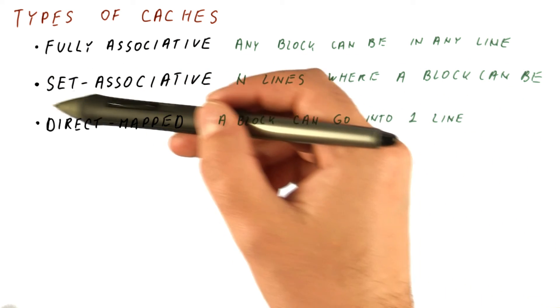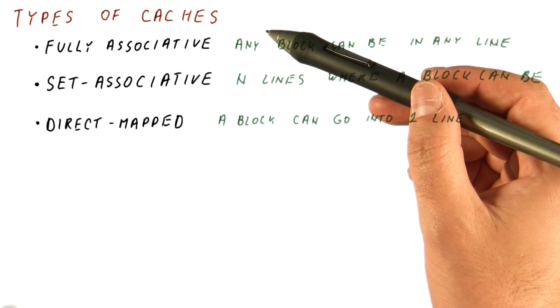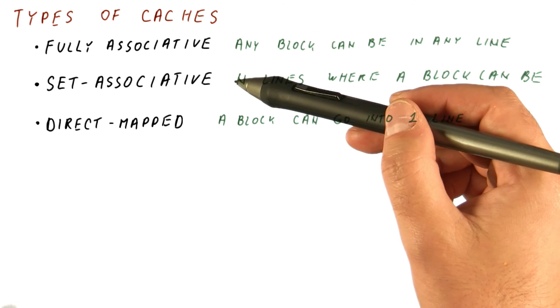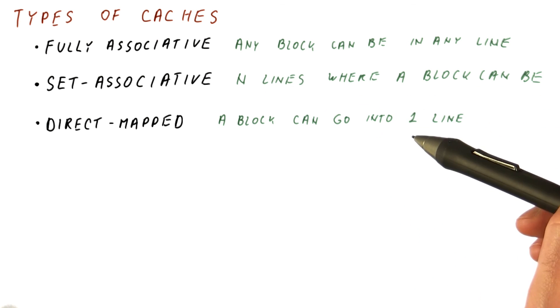But what we normally call a set-associative cache has a relatively small n compared to the number of blocks in that cache. That n is typically 2, 4, or 8, so it's larger than 1.